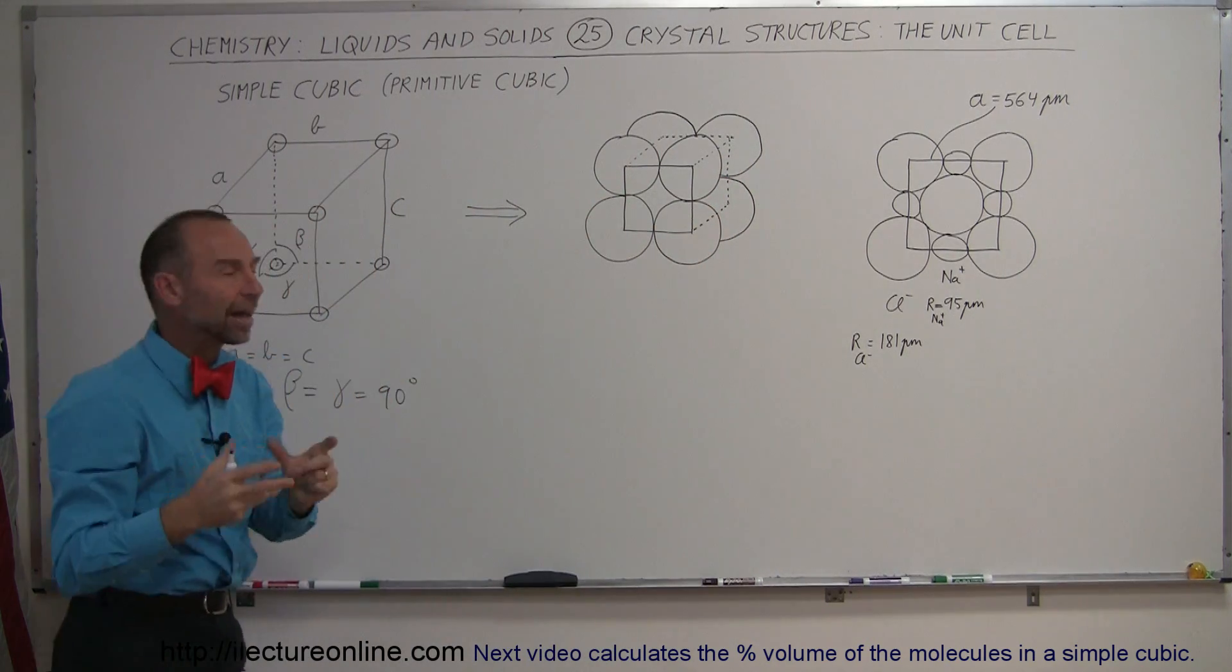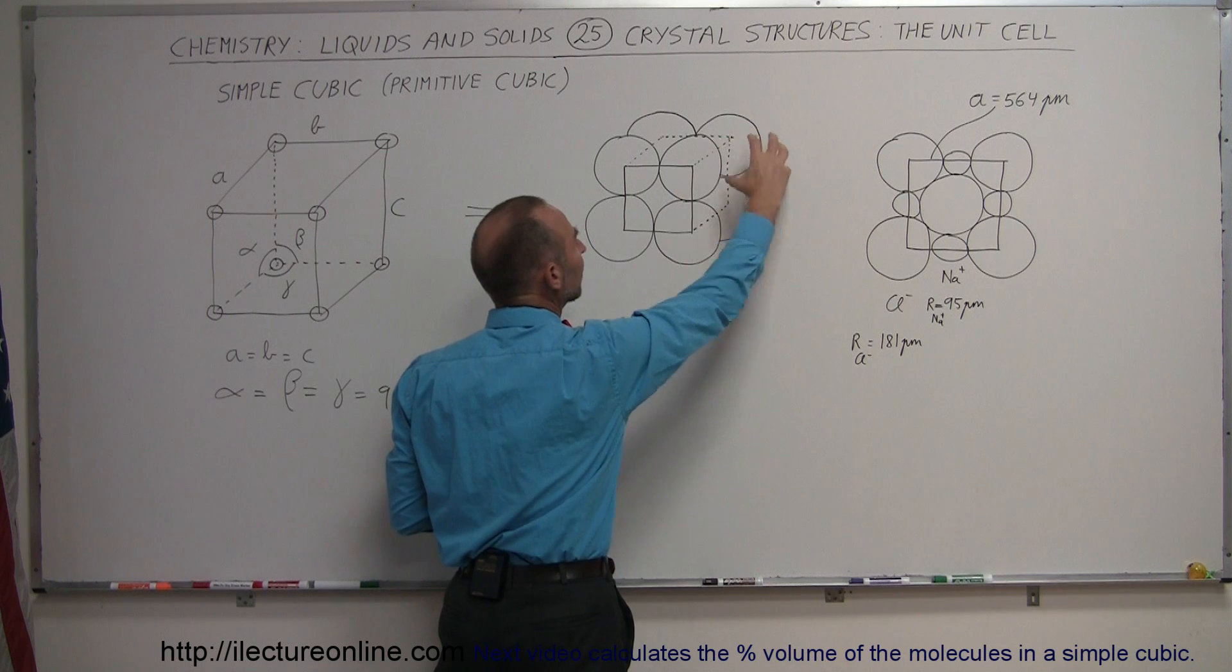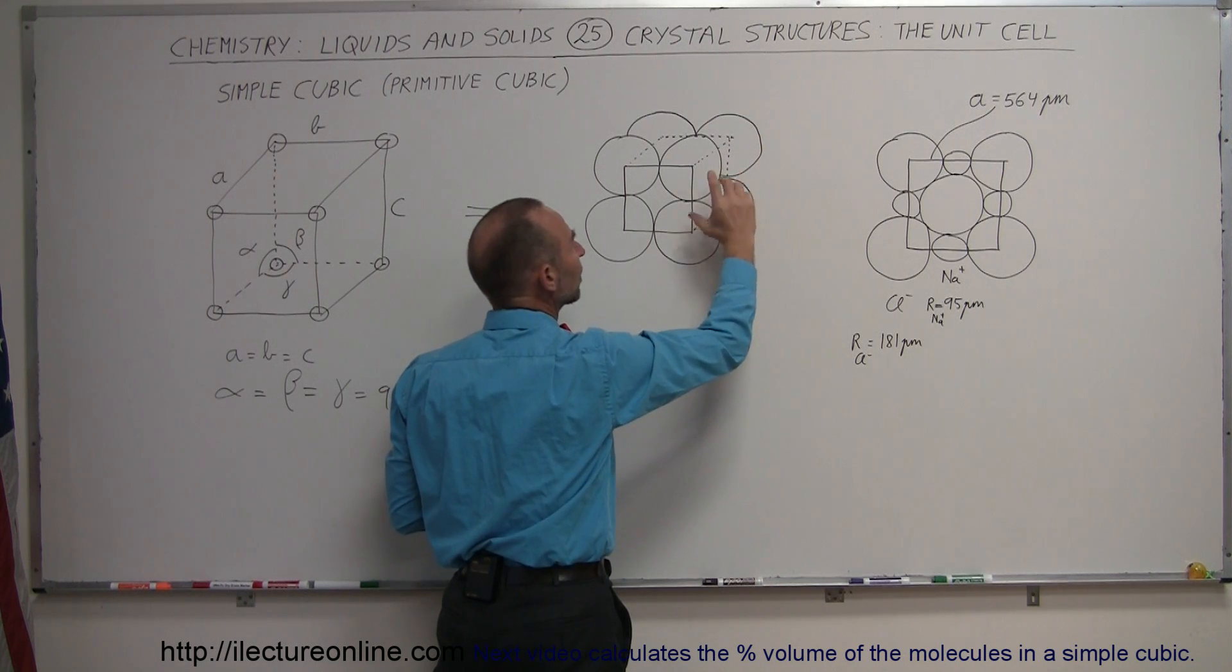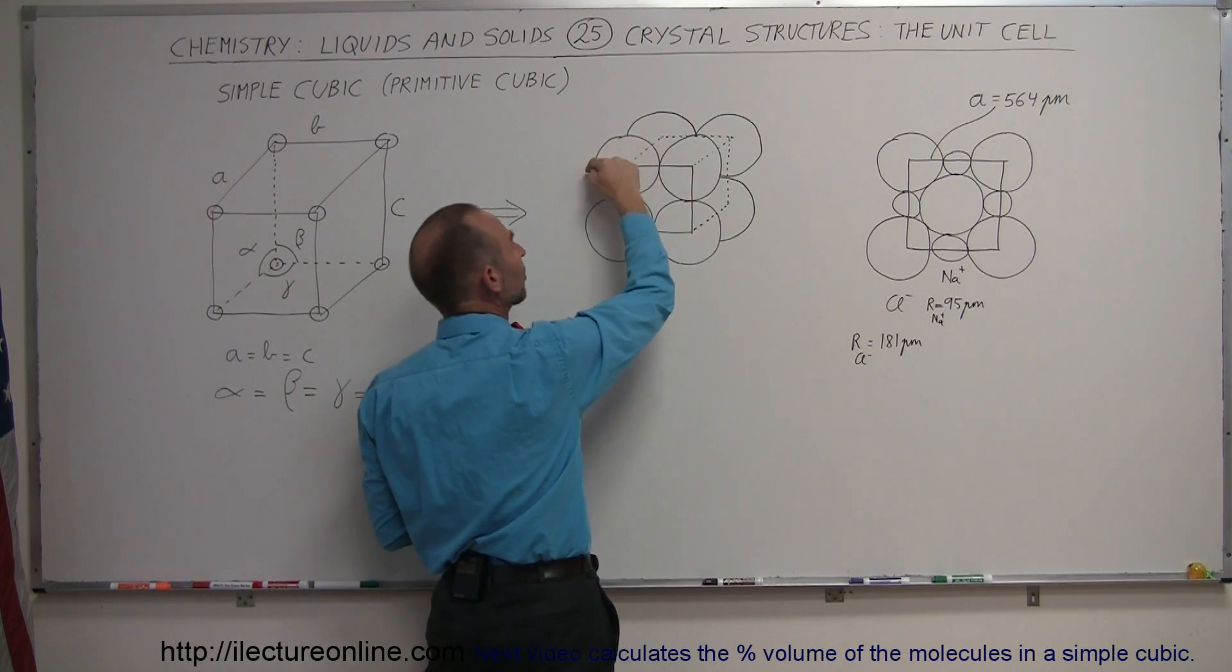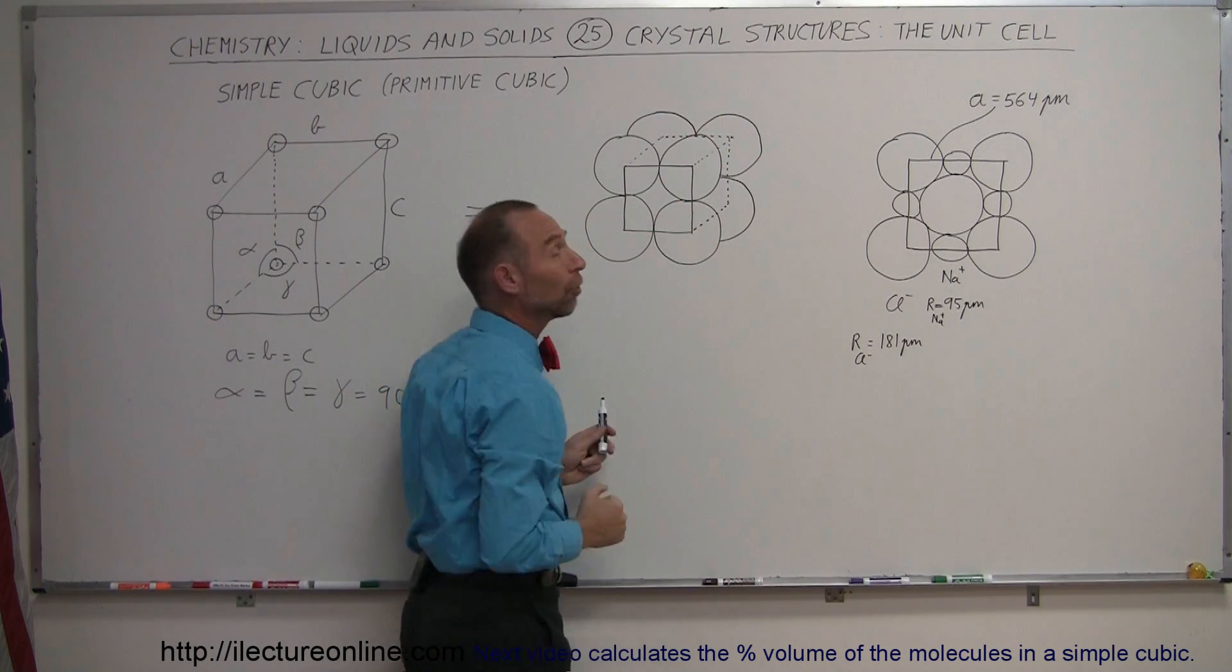The way we draw the cubic structure is by putting the corners of the cube at the center of the atoms in such a way that no matter where you put this cube, the content of the cube will be exactly the same. So if we draw another cube right next to it with four more of these atoms there, you can see that the next cube will look exactly the same as this cube, will look exactly the same as the one to the left, to the top, to the bottom, to the front, to the back, and so forth.